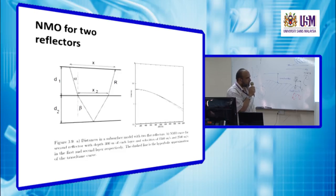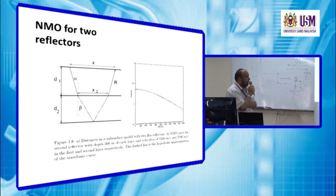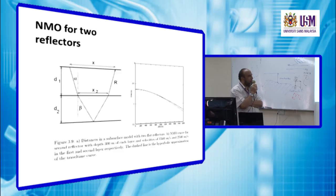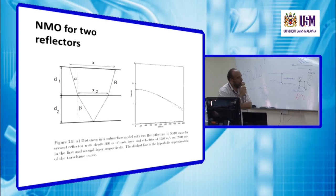In this example, one interface is at 300 m, and we have the velocity of the first layer at 1500 m/s while the velocity of the second layer is 2500 m/s. On the diagram to the right, the solid line is the actual or synthetic travel time, and the dashed line represents the hyperbolic fitting to this line.